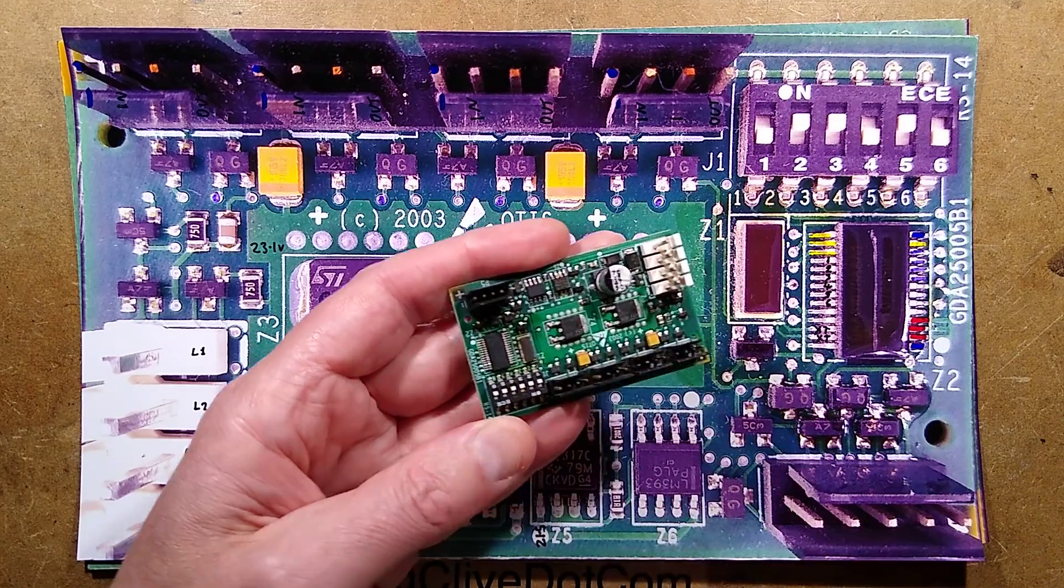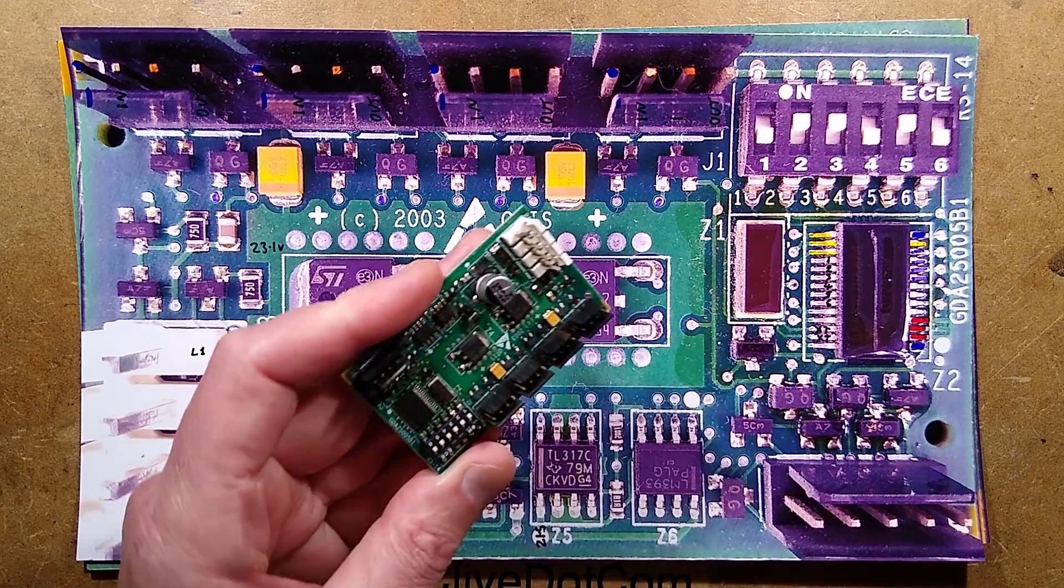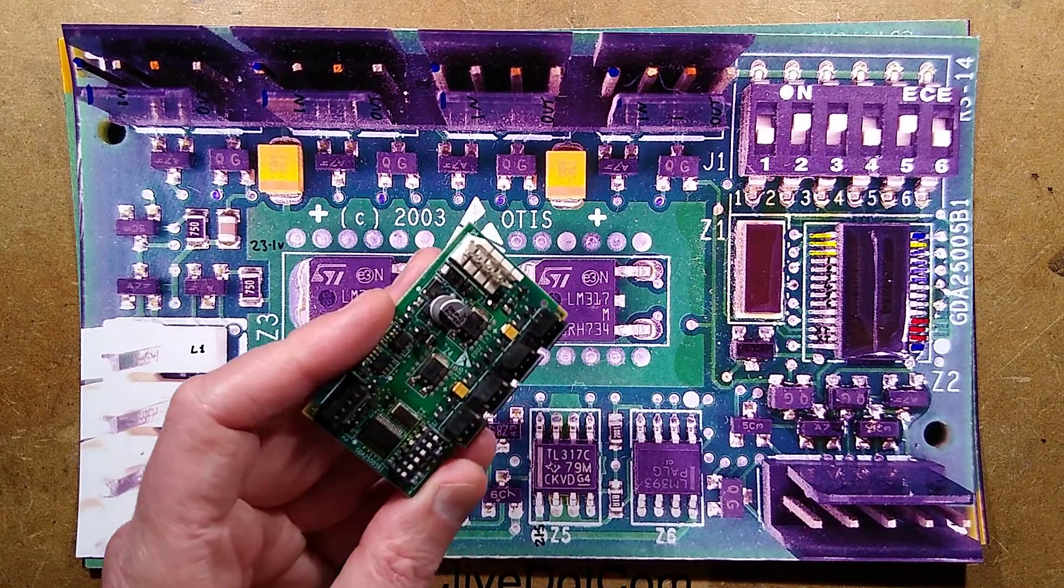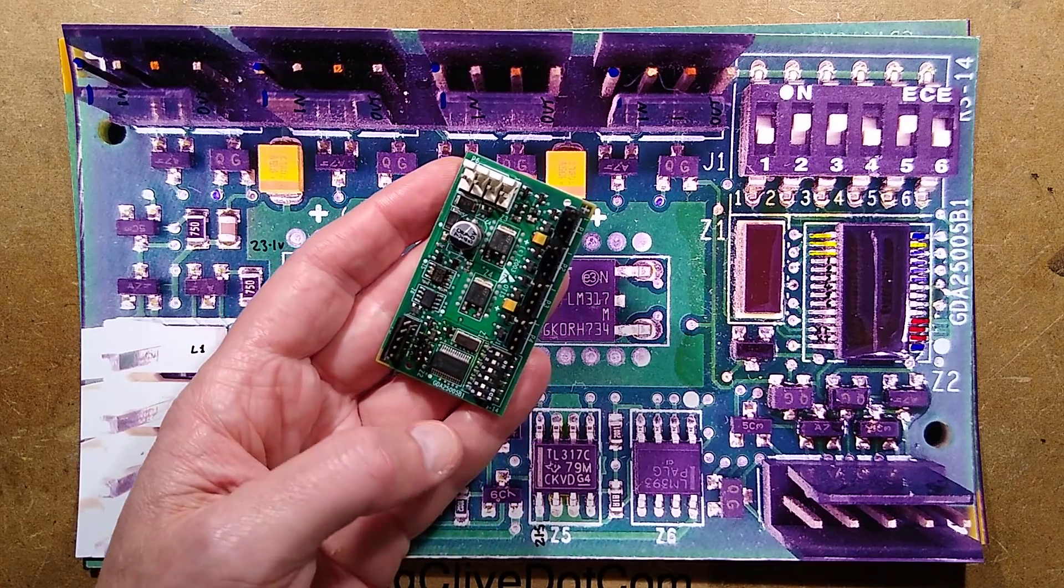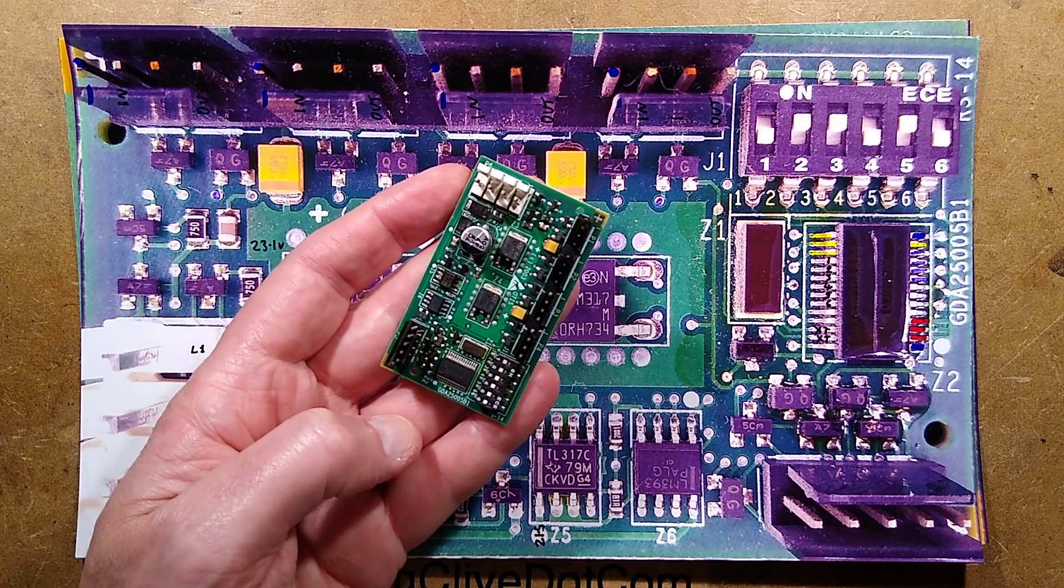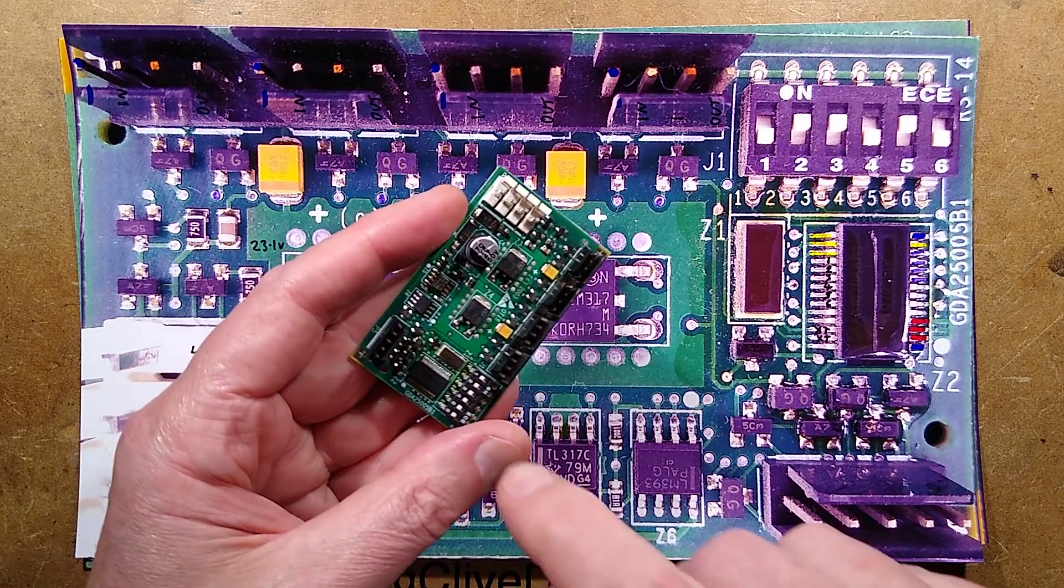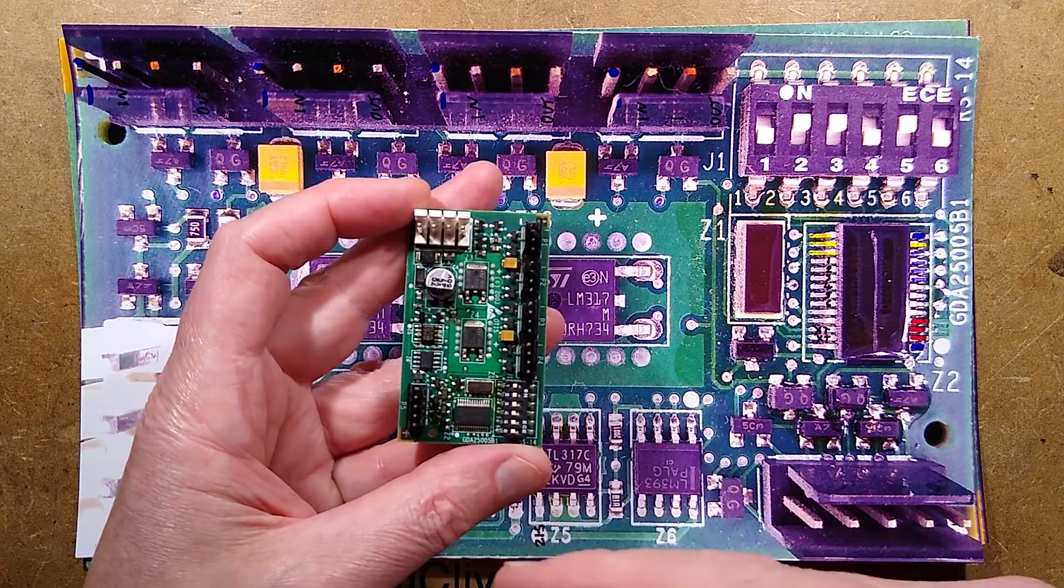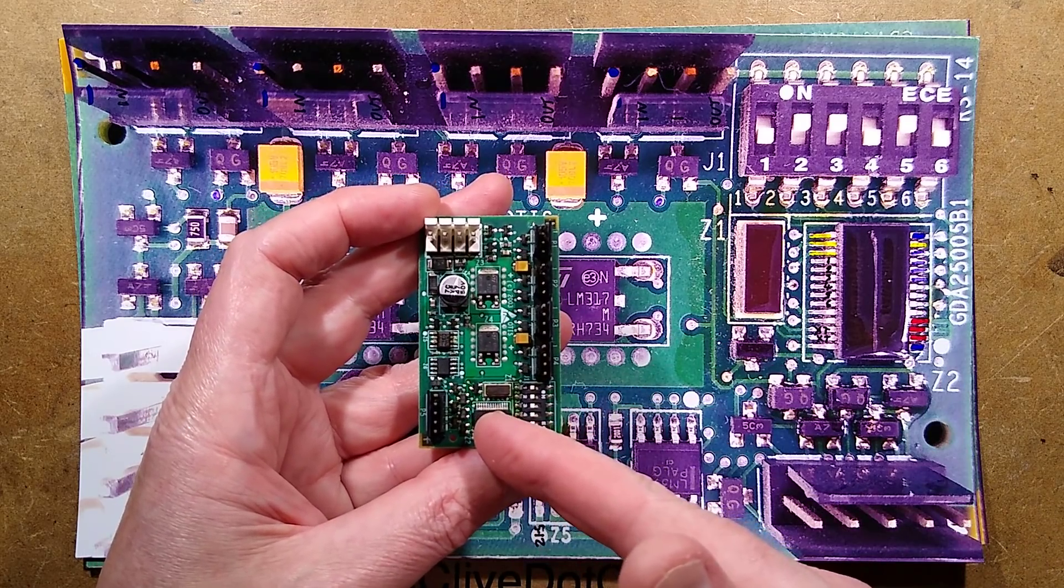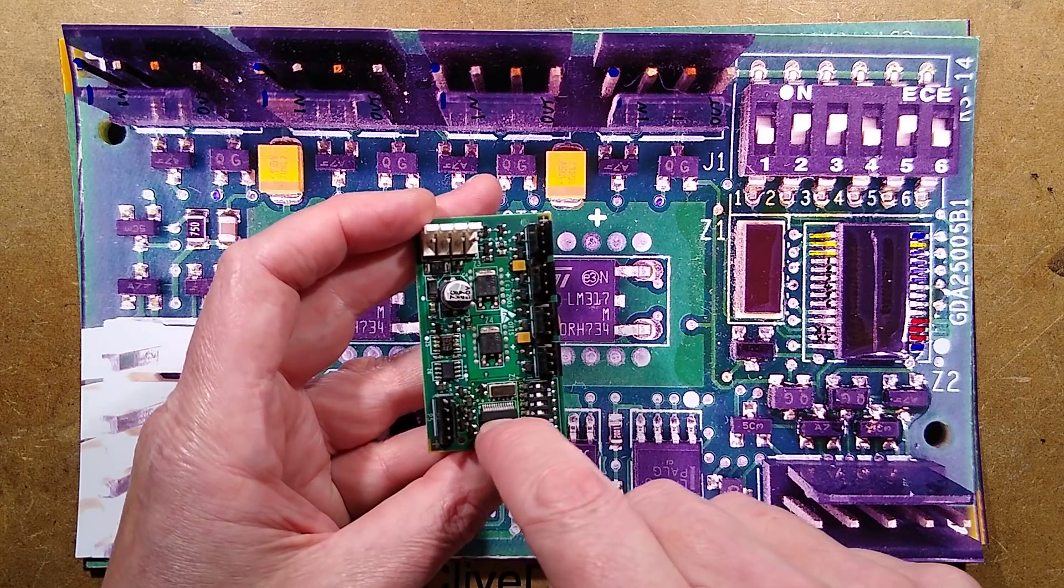This chip is GAA31070AAA1. It appears to be a PIC microcontroller but it's been custom programmed with Otis's own code and given their part number.